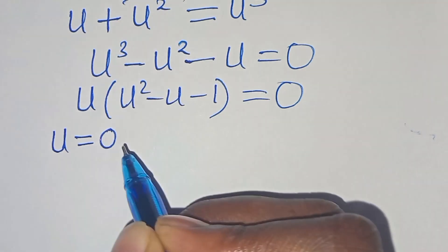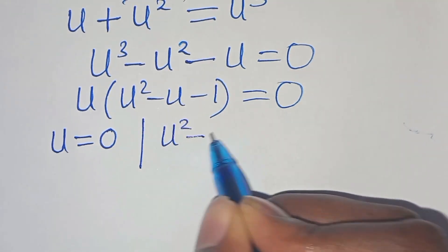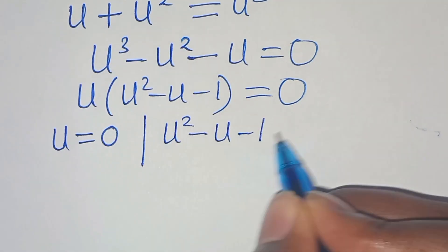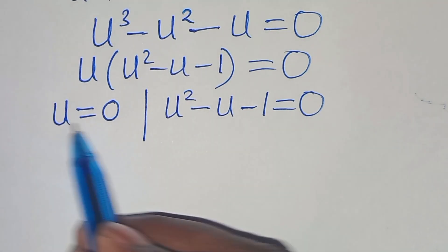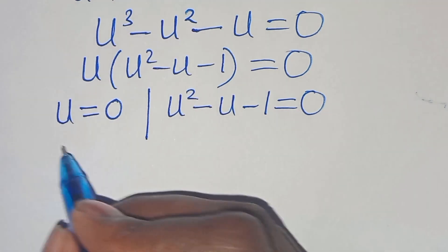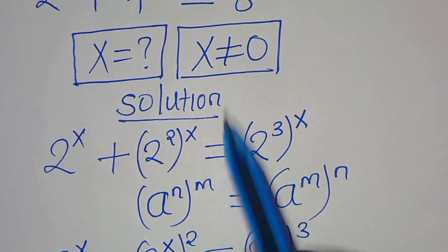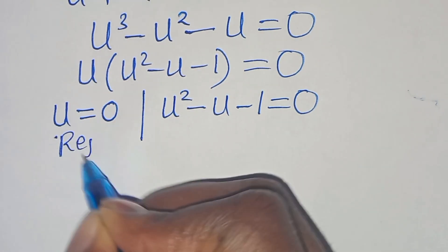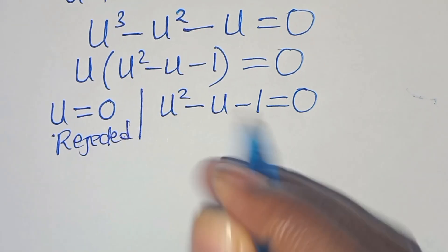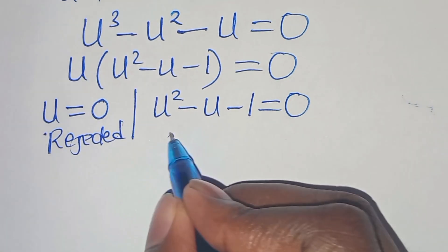So in this case we have two parts: u = 0, and u² - u - 1 = 0. Now u = 0 means 2^x = 0, which is undefined. Remember that x is not equal to 0 in this case, so this part where we have u = 0 is rejected. Let's proceed with the second part.